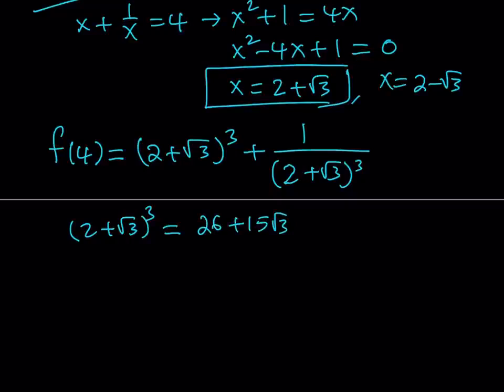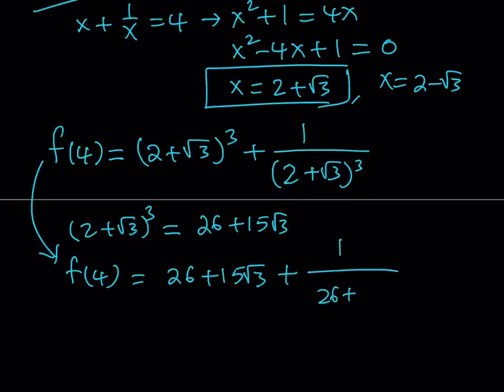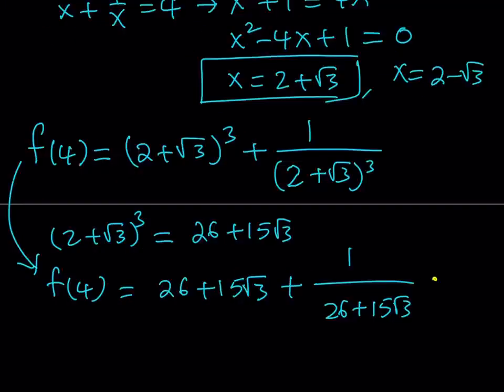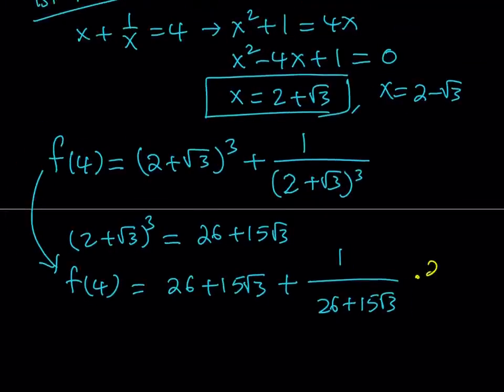Of course, you're going to get something, a number of the same kind. So now if I plug in this number into my equation here, f of 4 is going to equal 26 plus 15 root 3 plus 1 over that. And now at this point, we need to rationalize the denominator. Let's go ahead and multiply by the reciprocal, which is 26 minus 15 root 3, both the top and the bottom.